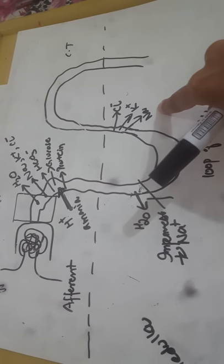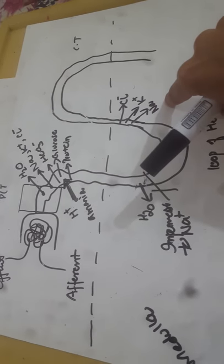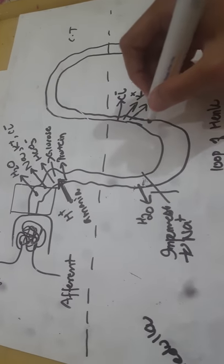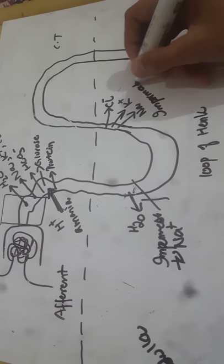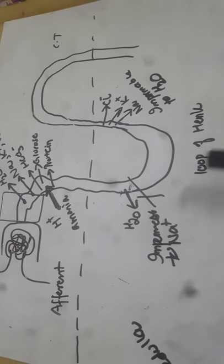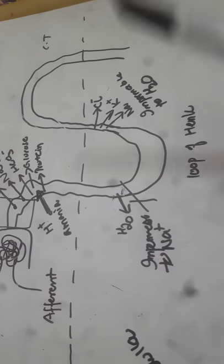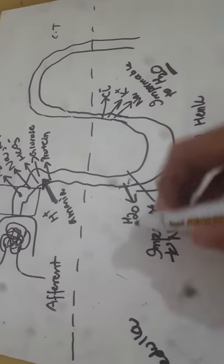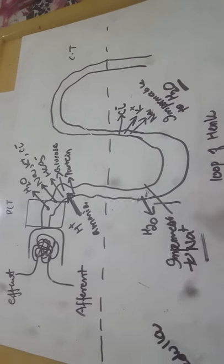The ascending limb is impermeable to water. So to summarize the loop of Henle: on the descending side it is impermeable to sodium, and water is reabsorbed; on the ascending side it is impermeable to water, and sodium, potassium, and chloride are reabsorbed. This is an easy pattern to remember.